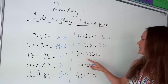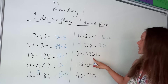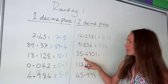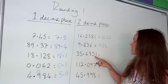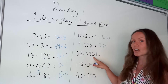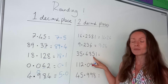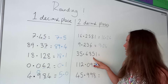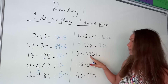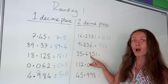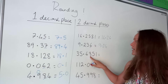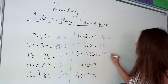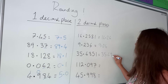Now this one down here. Again, we're checking the third number after the decimal point. This time it's the number 5, which means we have to round up. So this number gets rounded up to the number 9. So we've got 35.69.